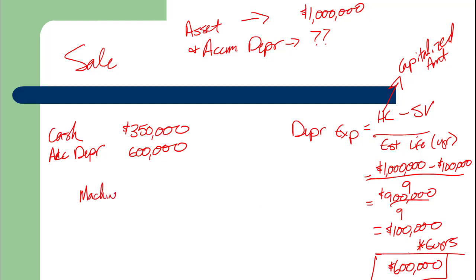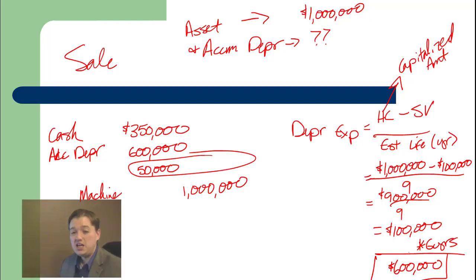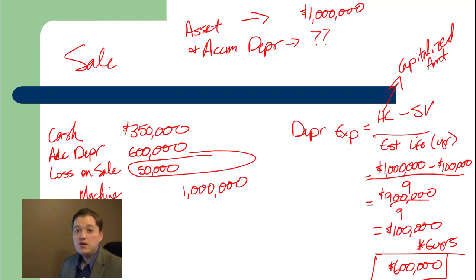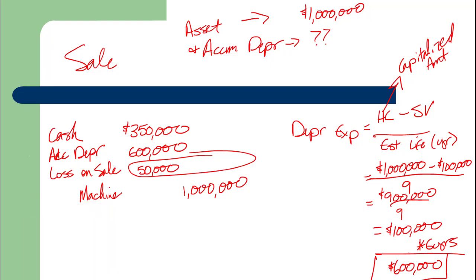Then I'll credit the asset — the machine. And now I need to know: do I need a gain or a loss to make this balance? In this case I need a debit to make this balance. Gain or loss affects equity. Equity is a credit account. So if I've got a loss, it's working like an expense — that's a debit. And I've got a debit here, so it must be a loss on sale. If we'd been able to sell it for $500,000, I'd have a gain, because I would have sold it for more than I thought it was worth, and I would have needed a credit to make it balance. This is the sale of machine.